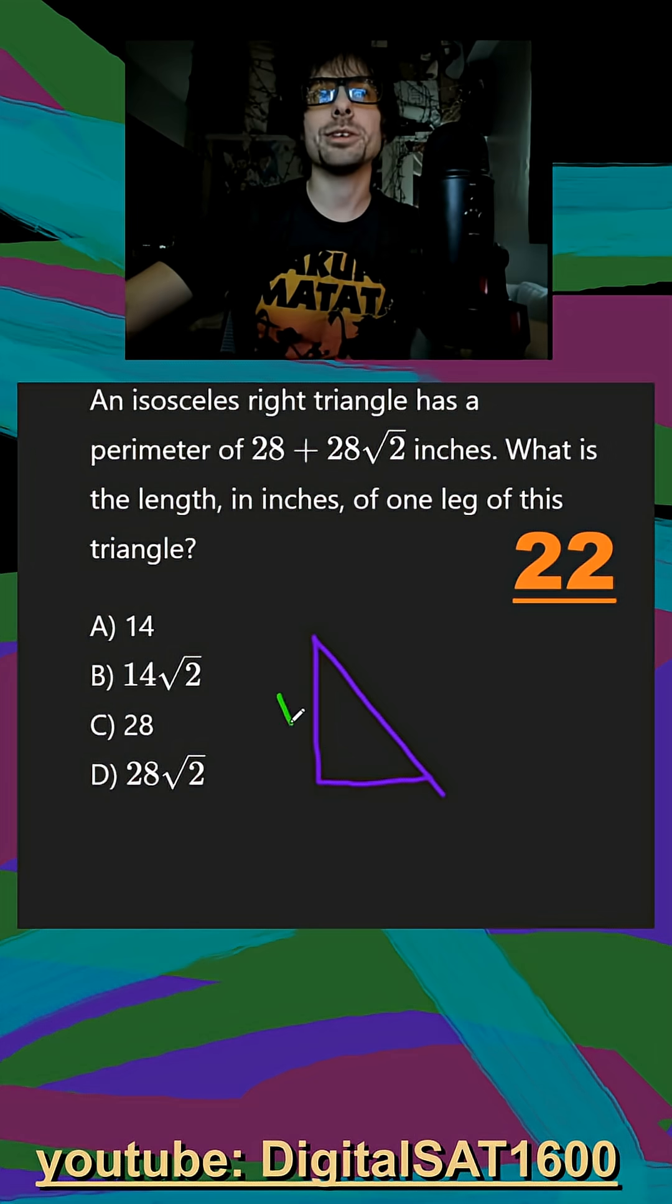If I pull up my equation sheet, that's going to be x, x, and x square root of 2. So already the equation for the perimeter here is going to be 2x plus x square root of 2.